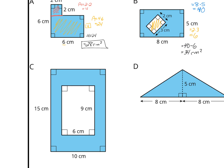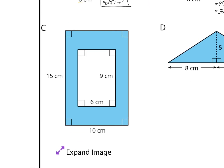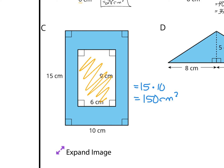Let's move on to C. We have a blue rectangle that's 15 by 10, so the blue area would be 15 times 10, or 150 square centimeters. Looking at the white region I need to subtract out, 9 times 6 gives 54 square centimeters. Subtracting: 150 minus 54 gives an area of 96 square centimeters.